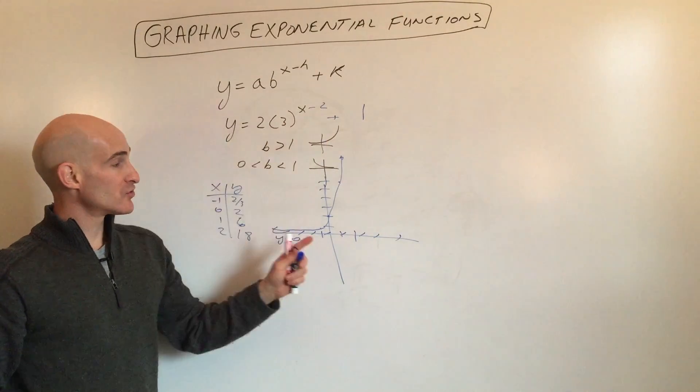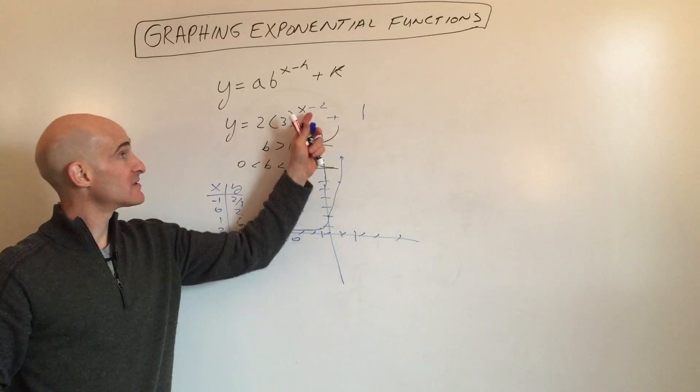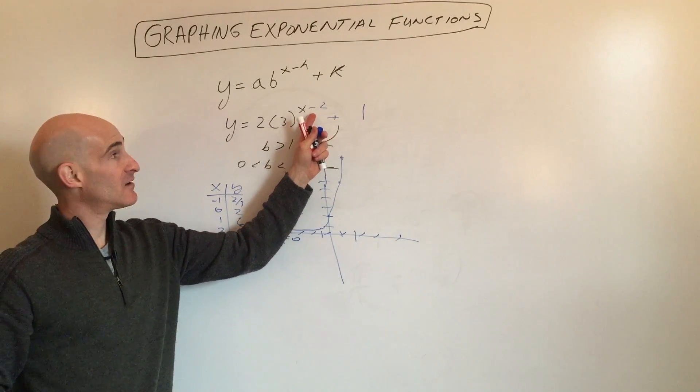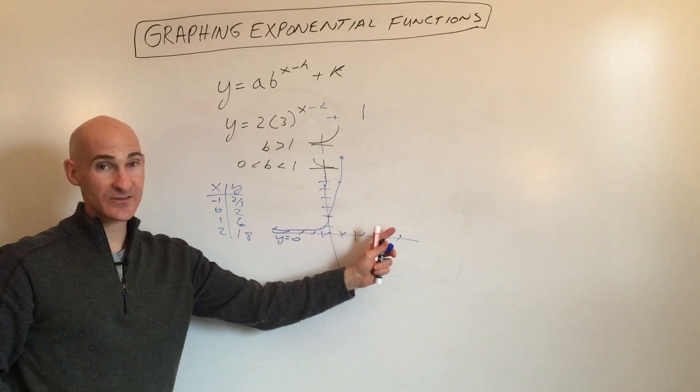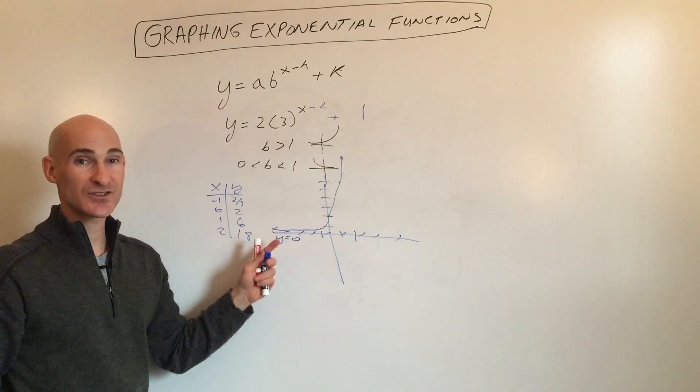That's right. The 2 shifts the graph right 2. This value actually has the opposite effect from what the sign suggests. Negative actually goes positive 2. If it was plus, it would go left 2.